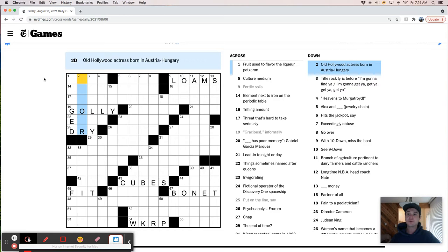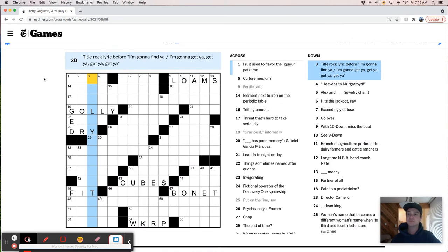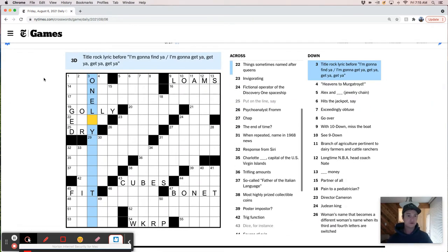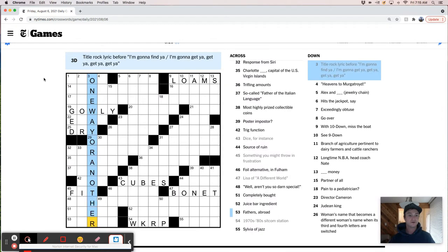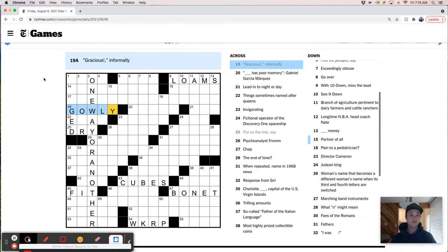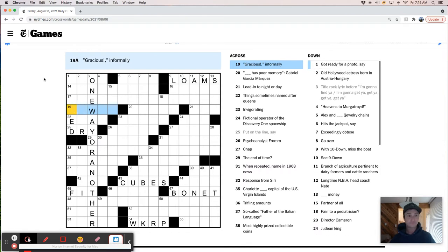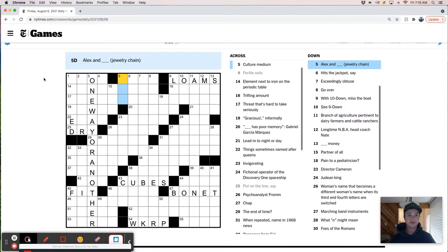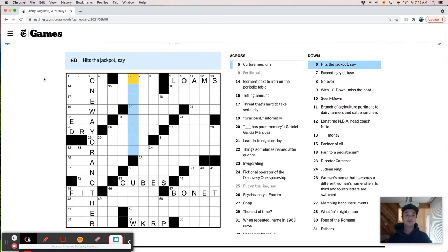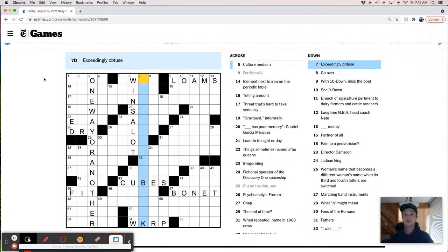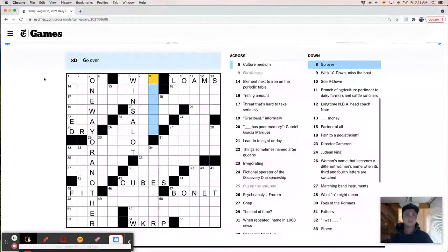Old Hollywood actress. Born in Austria-Hungary. Tidal Rock Lyric. Before I'm going to find you, I'm going to get you. One way or another. That's very helpful. Evans to Murgatroyd. Alex and something hits the jackpot. Wins big. Wins a lot. I don't know. Exceedingly obtuse. Something black. Is that what it is down there?